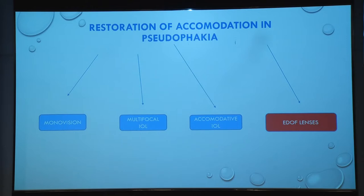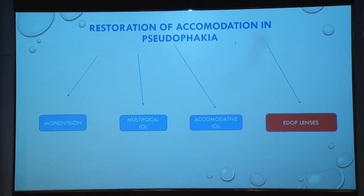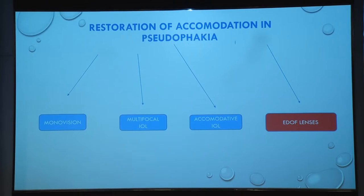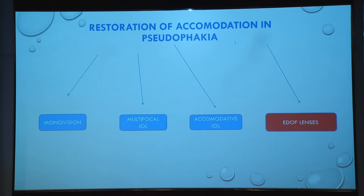First is monovision, where one eye is kept slightly myopic around -1.00 to -1.25D and the other eye is emmetropic, but it has its own set of problems. Multifocal IOLs we all use — they have their own problems which I will discuss. Accommodative IOLs were once very popular but now are not, and we are going to discuss extended depth of focus lenses.